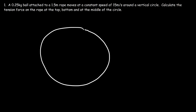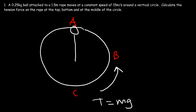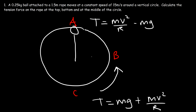For a vertical circle, how can we calculate the tension force at points A, B, and C? If you have a rope and ball swinging in a vertical circle, it will feel heaviest at point C — the bottom — because not only do you need to support the weight of the ball, you also have to lift it up to reach point B. The tension force at point C is the sum of the weight force and the centripetal force, and at point A — the top — it's the difference of the centripetal force and the weight force.